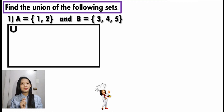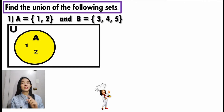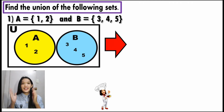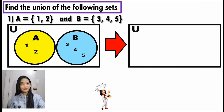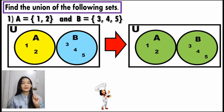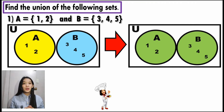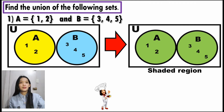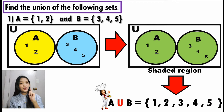So how are we going to illustrate A and B? Set A has the elements 1 and 2, and set B has the elements 3, 4, and 5. To get the union, let's go back to the definition — combine the elements. And when you combine the elements, observe what happened. From yellow and blue, it becomes green. This is because we already combined them as one. And therefore, the shaded region will be our answer. The elements in that shaded region will be our A union B — 1, 2, 3, 4, and 5.